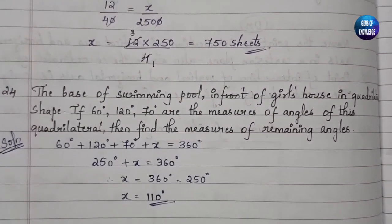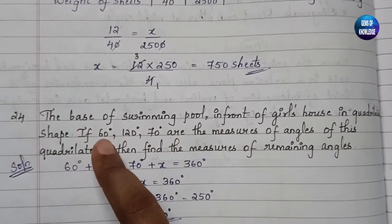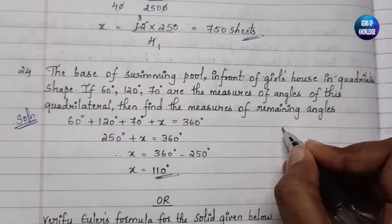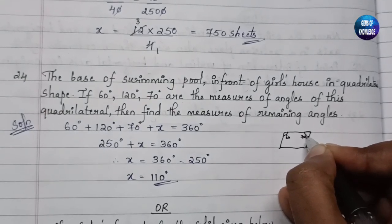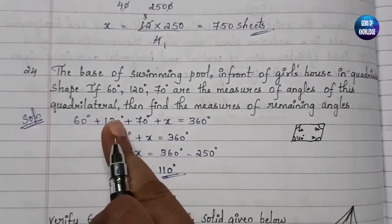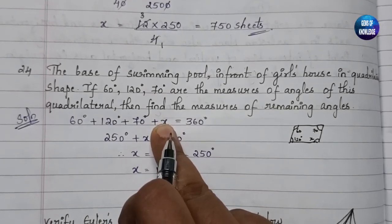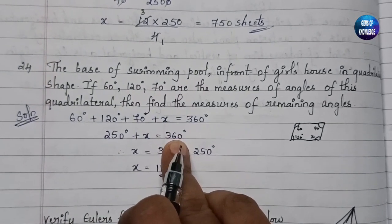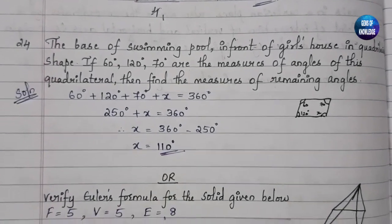Next question: The base of a swimming pool is quadrilateral-shaped. Three angles are 60°, 120°, and 70°. Find the fourth angle. The sum of all angles in a quadrilateral is 360°. So: 60 + 120 + 70 + x = 360, which gives 250 + x = 360, therefore x = 360 - 250 = 110 degrees.